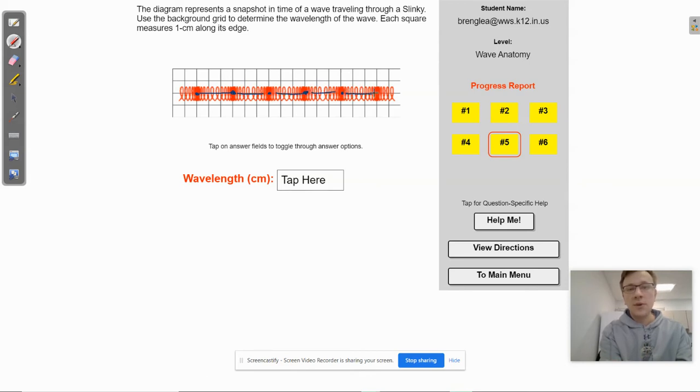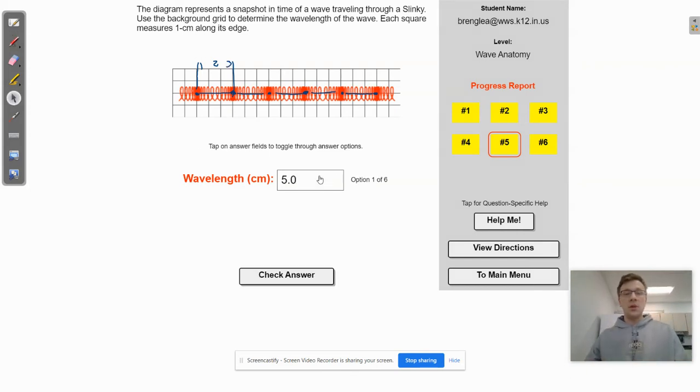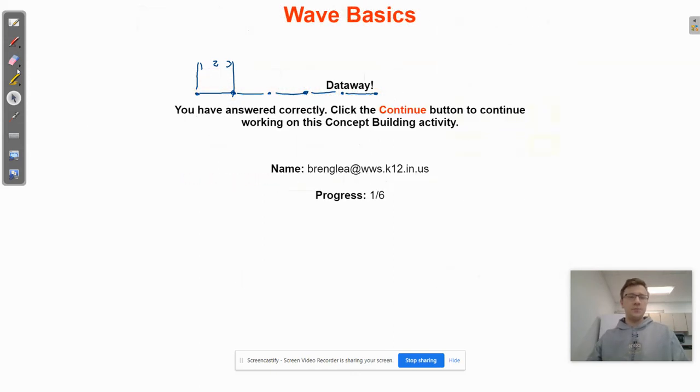So each one of those lines there is one wavelength. And you can do the same thing with the rarefactions. I just think it's easier to identify the compression. So what we're looking for here is we're actually looking for the distance from right here to right here for one wavelength. And since it did tell us that each of those squares was one centimeter along its edge, so this right here would be one centimeter, two centimeters, three centimeters right there. So one wavelength is going to be three centimeters. We'll go ahead and check our answer. All right. Great. And we'll erase that. And we'll move on.